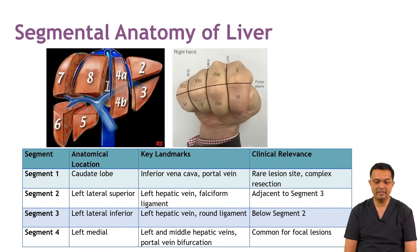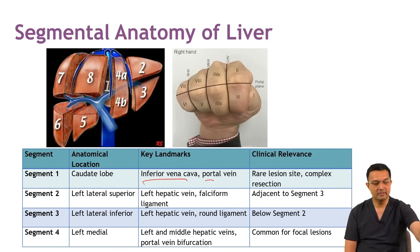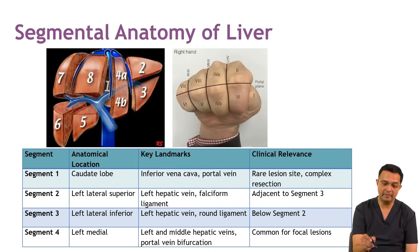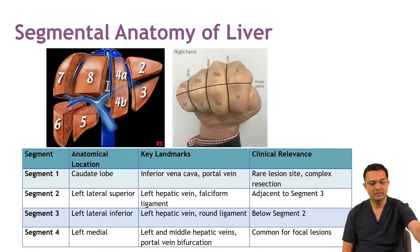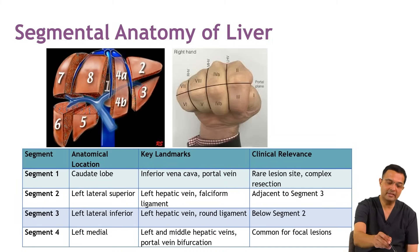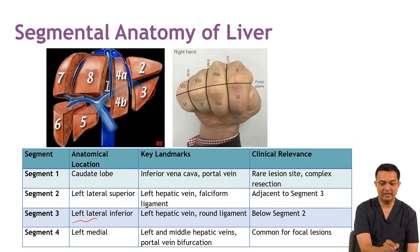Let us revise: Segment 1 is the caudate lobe; its key landmarks are the inferior vena cava and portal vein, and resection of the caudate lobe is very complex. Segment 2 is left lateral and superior; its key landmarks are the left hepatic vein and falciform ligament, and it is adjacent to Segment 3. Segment 3 is left lateral inferior, next to Segment 2.